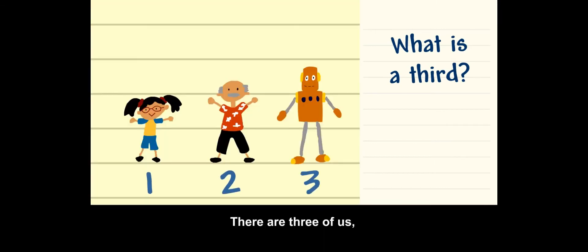There are three of us, but only one is a robot. So one out of three of us is a robot.